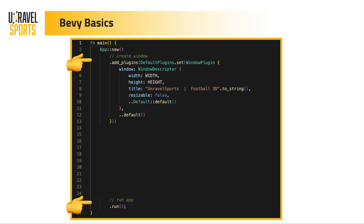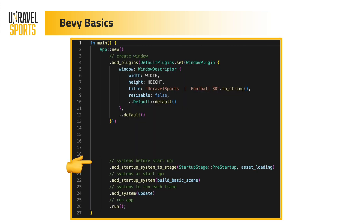In Bevy, this is the main function we just saw. If you want to build a Bevy app, the first thing you do is instantiate an app, tell it to create a window, then tell it to run, and it will create an empty window. You can add all sorts of plugins. For example, you can add plugins before startup — we want to load assets before the program starts, because otherwise the user will just be waiting with an empty window.